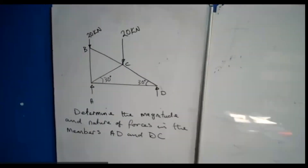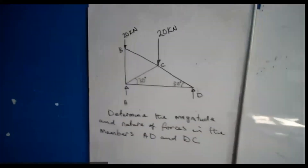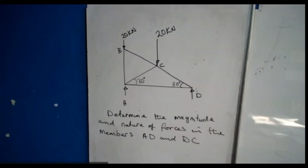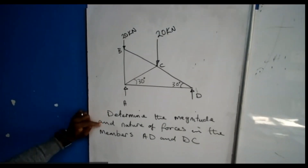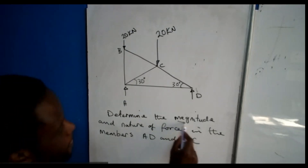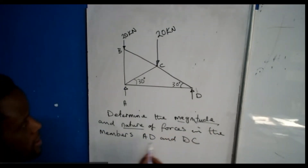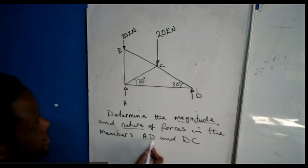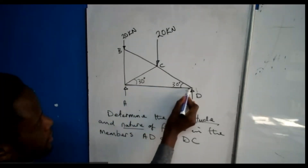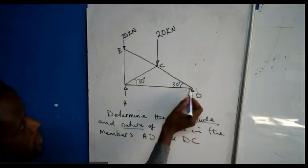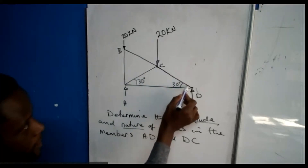Here's the question I promised I'd do a video on regarding this strength problem. The question says: determine the magnitude and the nature of the forces in AD — so AD is this line — and DC, which is from this point up to B, so which is this member.